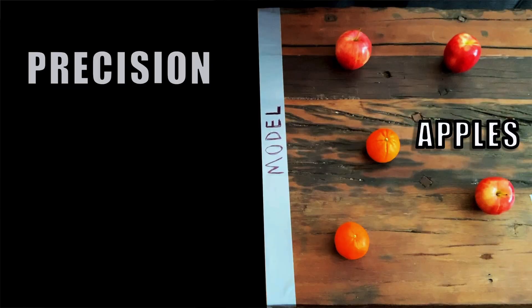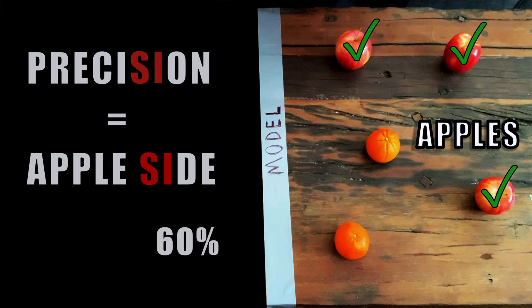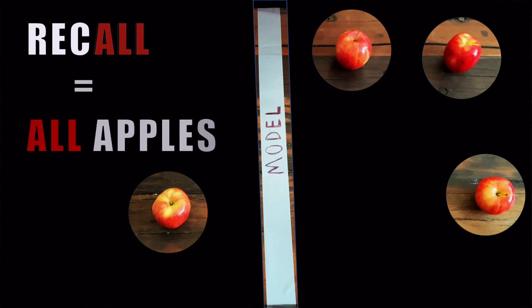To recap: for precision on the apple class, focus on the apple side of the model — three apples correct out of five observations, giving 60% precision. For recall, focus on all of the apples — three correct out of four possible apples, giving 75% recall. So what's the big benefit here over measuring just accuracy?